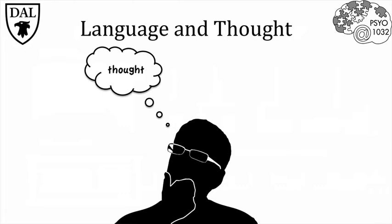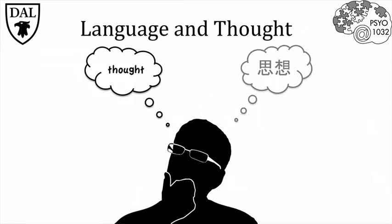The benefits of language as a communication system are obvious. It allows humans to talk about the past and future, and even things that have never happened. It allows us to easily share memories, and therefore knowledge. With 5,000 different languages, there are a lot of ways to say things. Does that mean there are different ways of thinking about things?